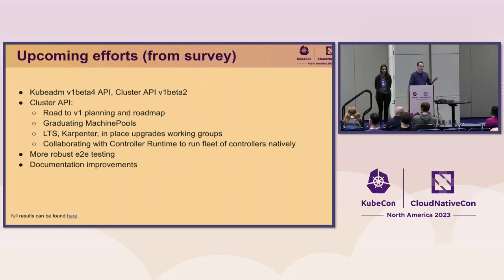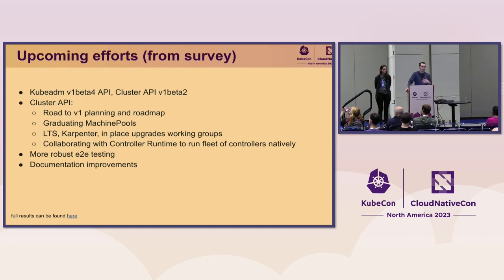A lot of other things for CAPI specifically. Graduating machine pools has been on the roadmap for a while — today it's experimental and not enabled by default. We need help to bring it to the maturity level of the rest of the APIs.